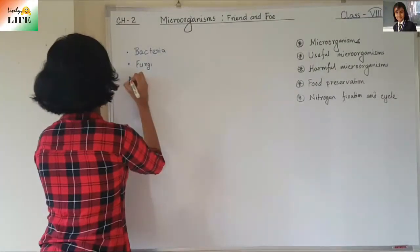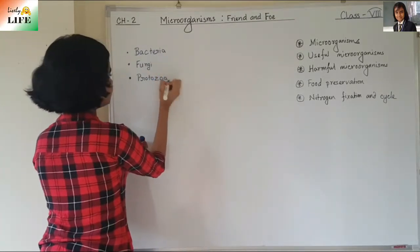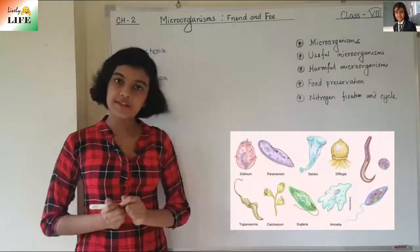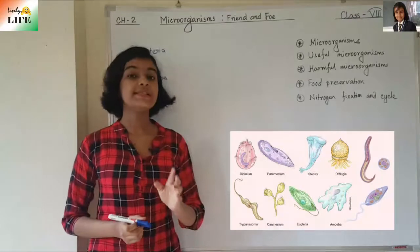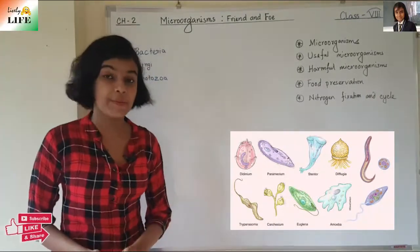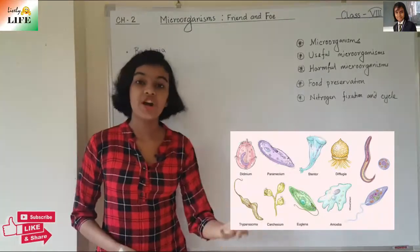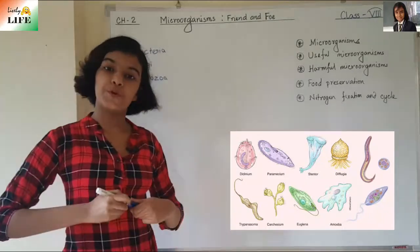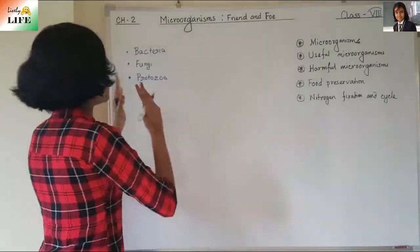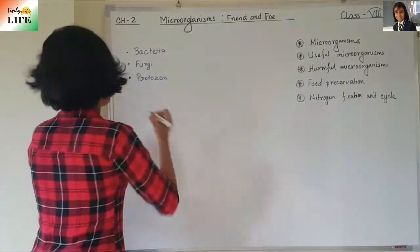Protozoa is also a microorganism and it is unicellular, meaning single-celled. Examples of protozoa include Amoeba, Paramecium, and Giardia. We will learn about where bacteria, fungi, and protozoa live a little later.